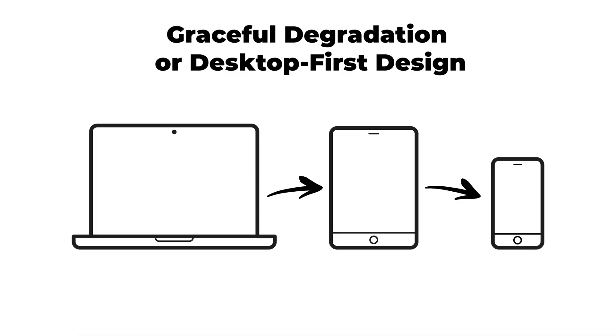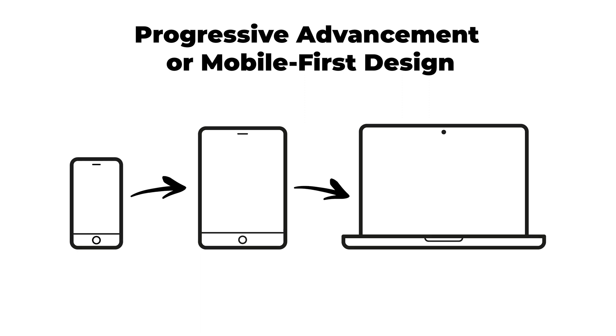But before we start designing, we first need to establish our strategy. Should you start from a mobile device perspective and then scale the interface up to high resolutions? Or maybe you should start from the desktop and scale the interface down to accommodate mobile devices? The approach of scaling down interfaces is popularly known as graceful degradation or desktop-first approach, while scaling up is known as progressive advancement or mobile-first design. A downside to the desktop-first approach is that several interface elements do not adapt well to smaller screen sizes, which degrades the visual appearance and functionality on smaller devices.